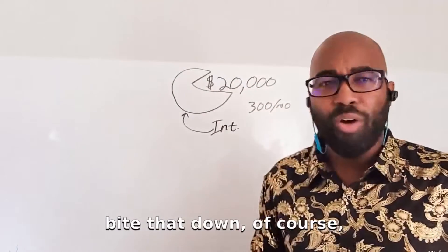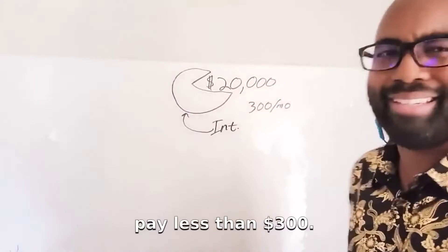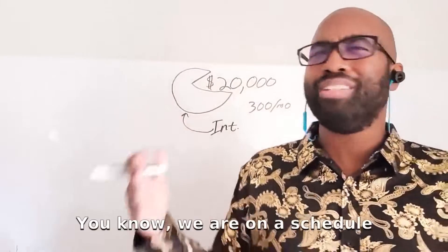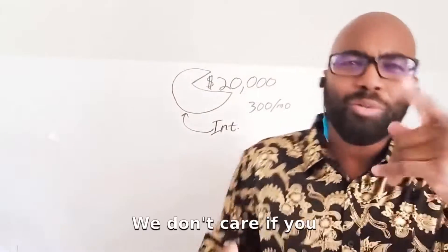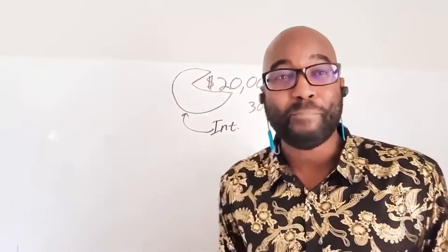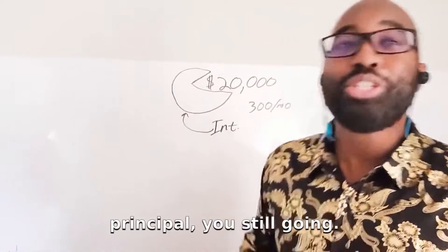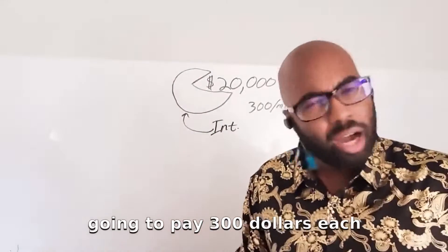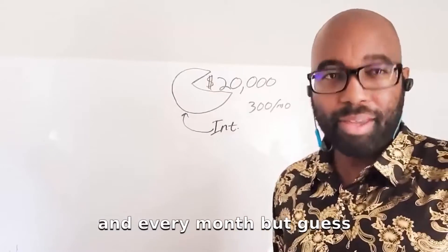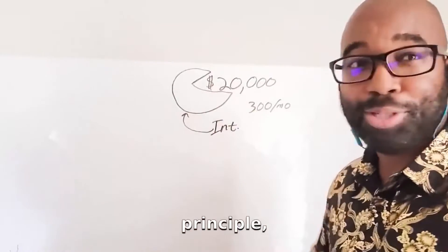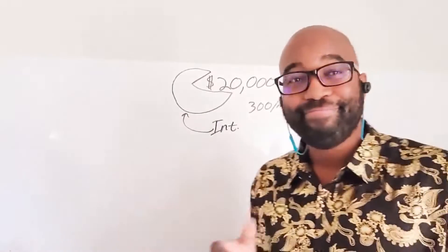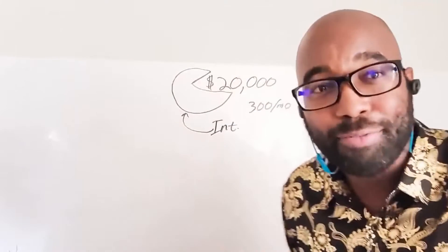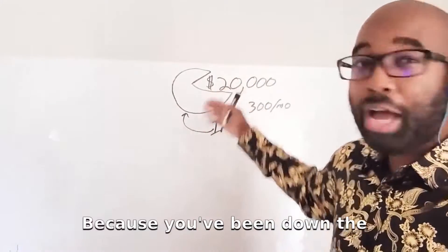As you continue to bite down the principal, the lender won't let you pay less than $300 — that's how loans work, you're on a scheduled payment. But when you chunk down the principal, you still have less time to pay it off. Say you put $10,000 toward it and keep paying month after month — the loan ends sooner because the principal has been reduced so much.